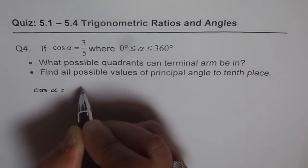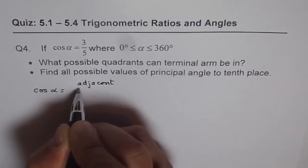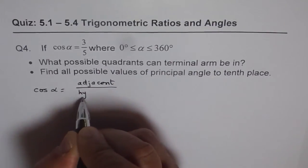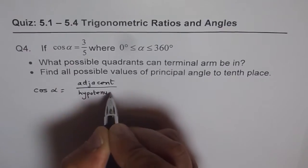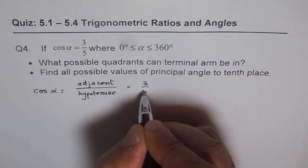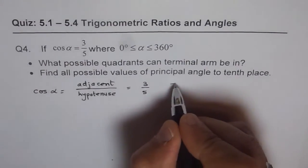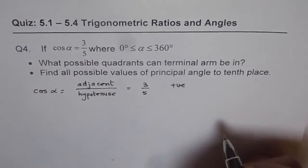Cosine alpha is equal to adjacent over hypotenuse, right? And that is given to us as 3 over 5, and if we want that to be positive, it means what?